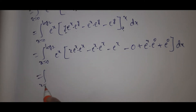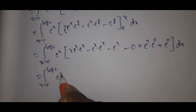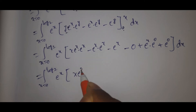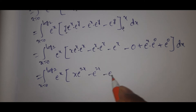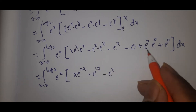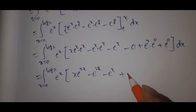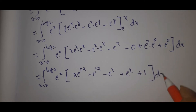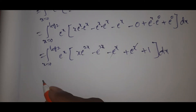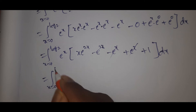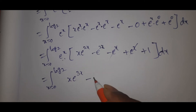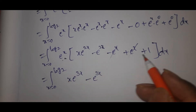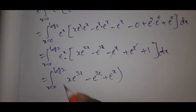See here: the integral from x equal to 0 to log 2 of e to the power x, times x into e to the power x, plus x into e to the power 2x, minus e to the power 2x, minus e to the power x, plus e to the power x, plus 1, into dx. The e to the power x terms cancel, giving the integral from 0 to log 2 of x·e to the power 3x minus e to the power 3x plus e to the power x, into dx.